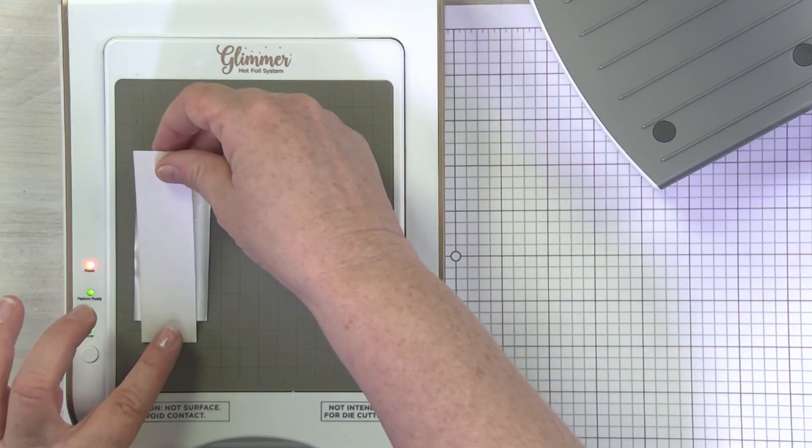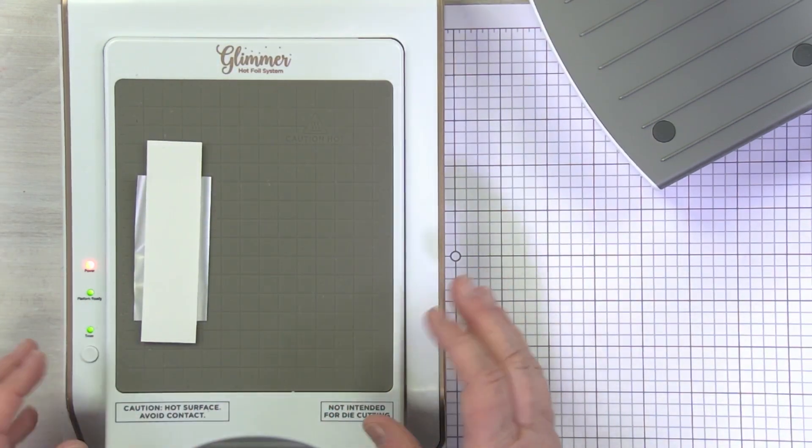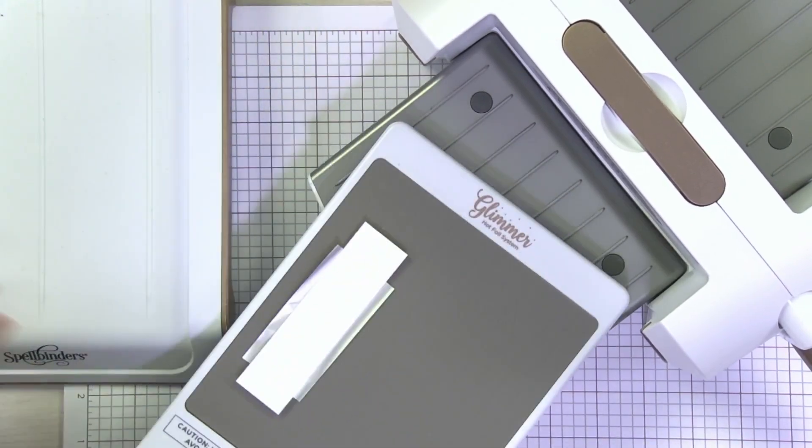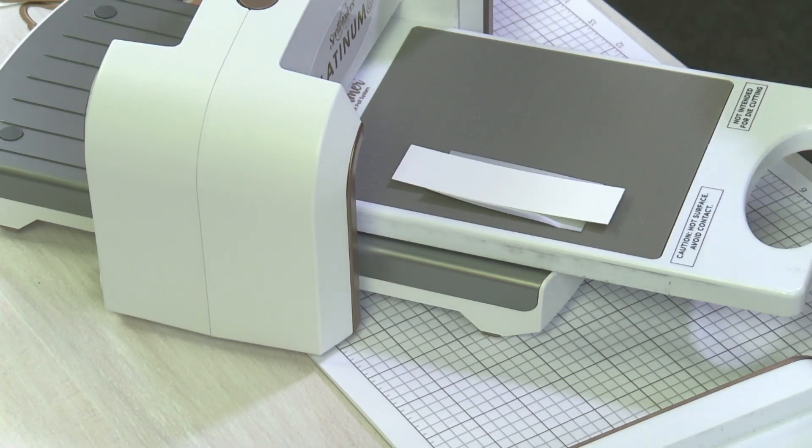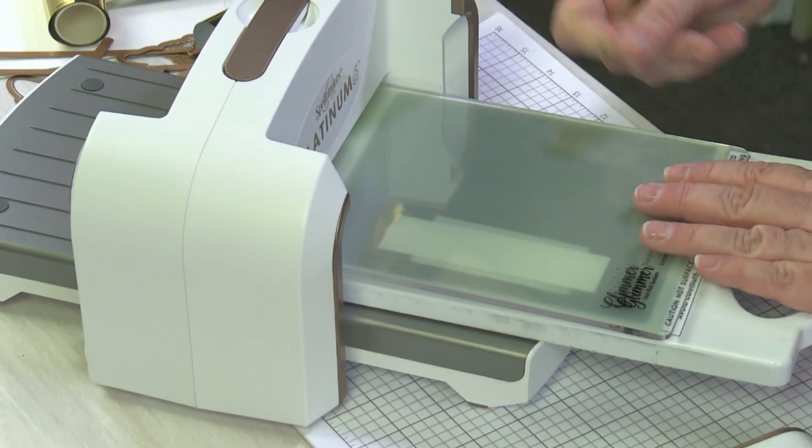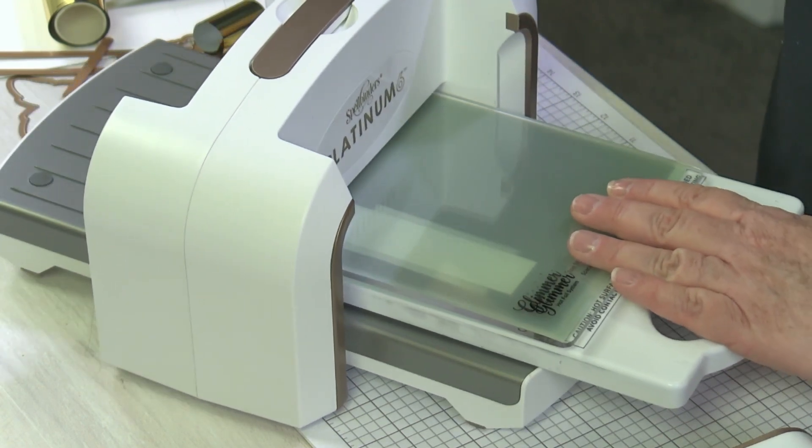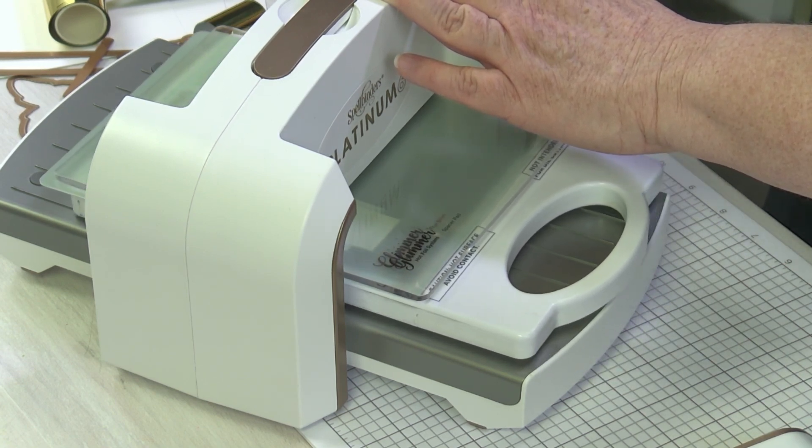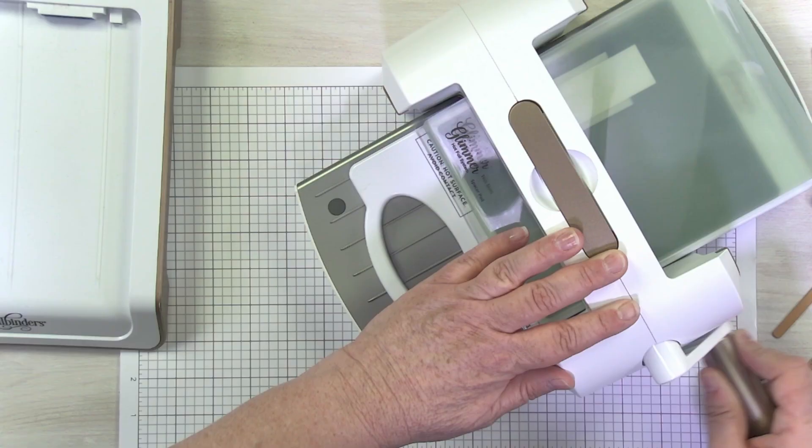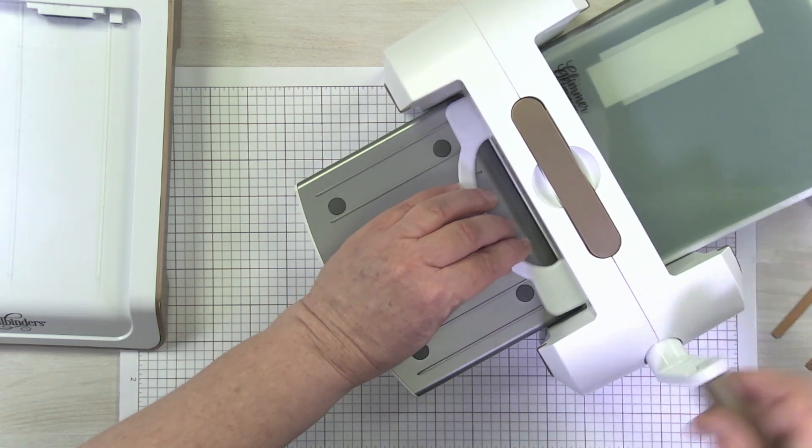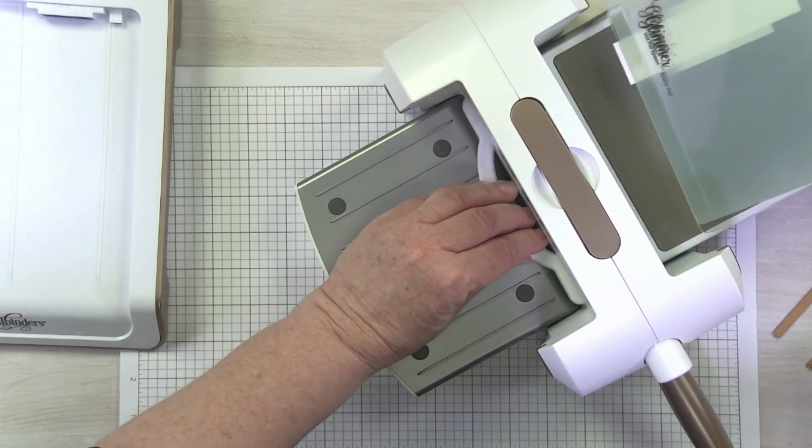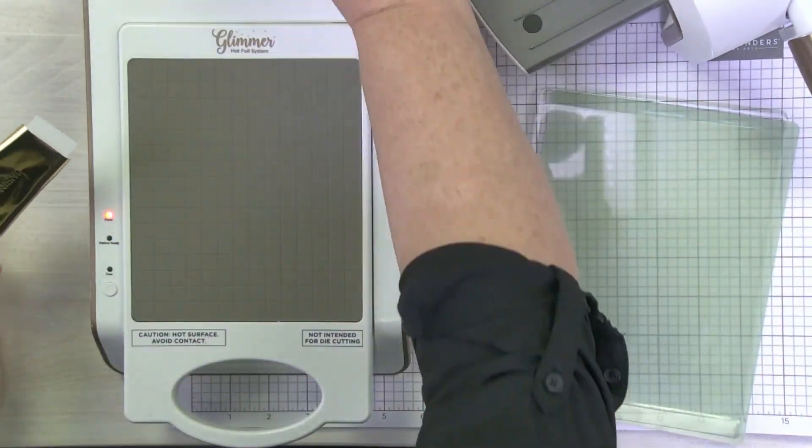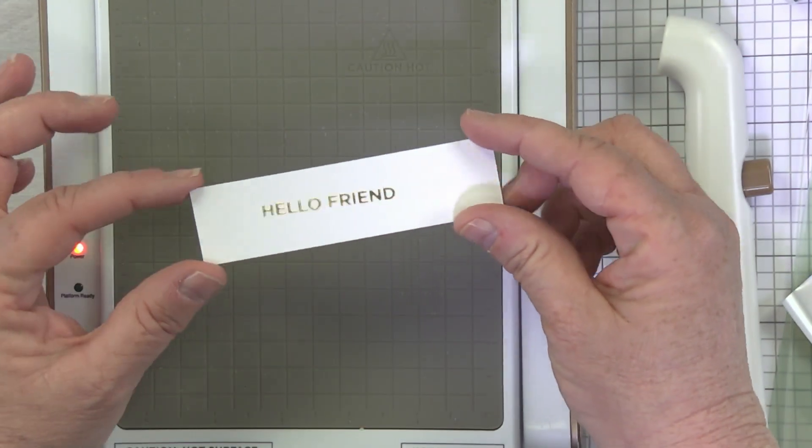I'm going to bring in my background. This panel is going to be trimmed down to a little bit smaller than four by five and a quarter. So that's why it doesn't bother me that this is not perfectly centered on here. I'm going to be trimming away some of this cardstock. Before adding my shims, I'm going to undock my die cutting machine. You're going to have so much fun once you master this hot foiling.